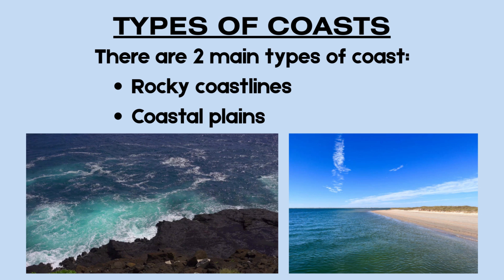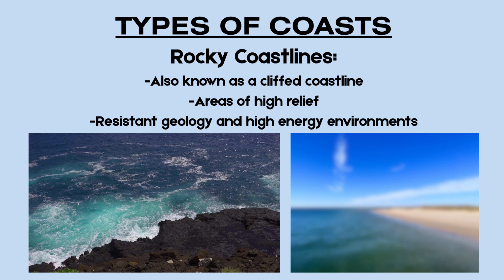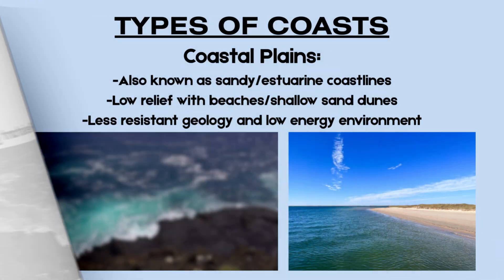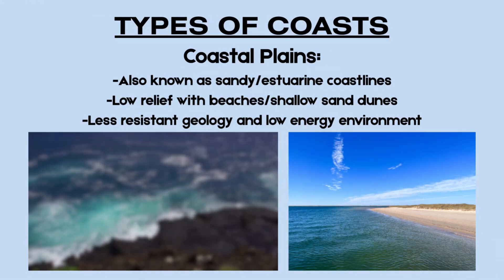There are two types of coast: rocky coastlines and coastal plains. Rocky coastlines are also known as cliff coastlines and are areas of high relief. They have resistant geology meaning they erode more slowly and are found in high energy environments with destructive, powerful waves. Coastal plains are also known as sandy or estuarine coastlines. They have a low relief with beaches or shallow sand dunes, less resistant geology, and are a low energy environment.